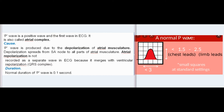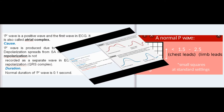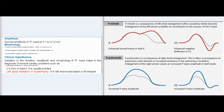Duration: Normal duration of P-wave is 0.1 second. Amplitude: Normal amplitude of P-wave is 0.1 to 0.12 mV. Morphology: P-wave is normally positive (upright) in leads I, II, AVF, V4, V5, and V6. It is normally negative (inverted) in AVR.